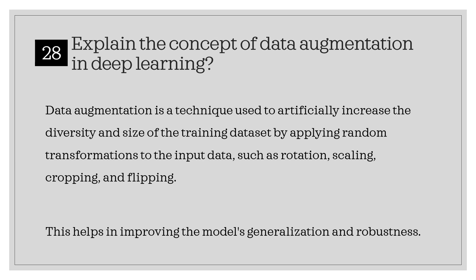Explain the concept of data augmentation in deep learning. Data augmentation is a technique used to artificially increase the diversity and size of the training dataset by applying random transformations to the input data, such as rotation, scaling, cropping, and flipping. This helps in improving the model's generalization and robustness.